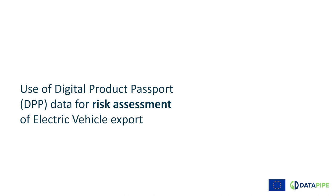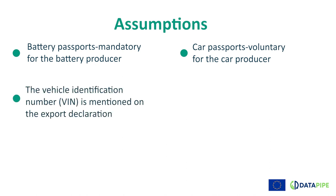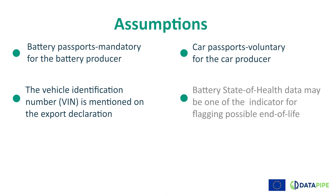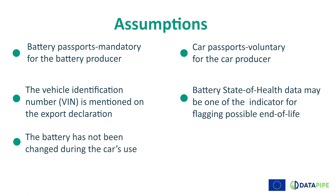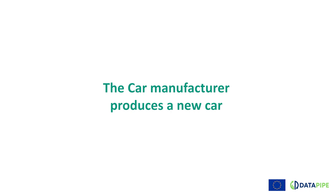Here we look at the export of second-hand electric cars with the aim to prevent the export of end-of-life vehicles, which could be considered to be waste. We make five assumptions: first, the battery DPP is mandatory; second, the car producer issues a car passport voluntarily; third, the vehicle identification number, also called the VIN number, is mentioned on the export declaration; fourth, the battery state-of-health data may be one of the indicators that customs could use when deciding whether a car can be considered end-of-life; and finally, the battery in the car has not been changed.